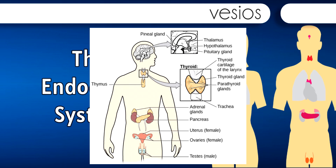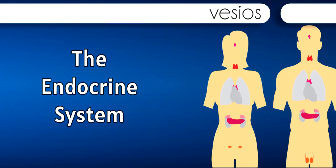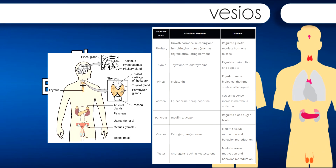Hormones are involved in regulating all sorts of bodily functions, and they are ultimately controlled through interactions between the hypothalamus in the central nervous system and the pituitary gland in the endocrine system. Imbalances in hormones are related to a number of disorders. This section explores some of the major glands that make up the endocrine system and the hormones secreted by these glands.